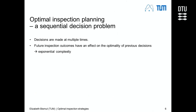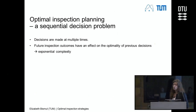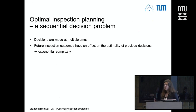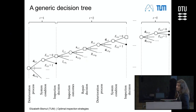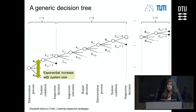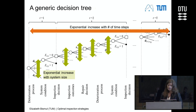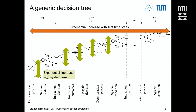The optimal inspection planning is described as a sequential decision problem. To find an optimal solution, we have to look at everything possibly happening, calculate the associated costs, and assess how likely they are to occur. The generic decision tree looks like this. With multiple components, the size of the system increases exponentially, and if you want to increase the number of time steps where you can inspect or maintain the system, the complexity increases further.